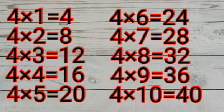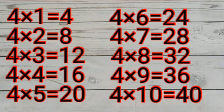Four ones are 4. Four twos are 8. Four threes are 12. Four fours are 16. Four fives are 20.